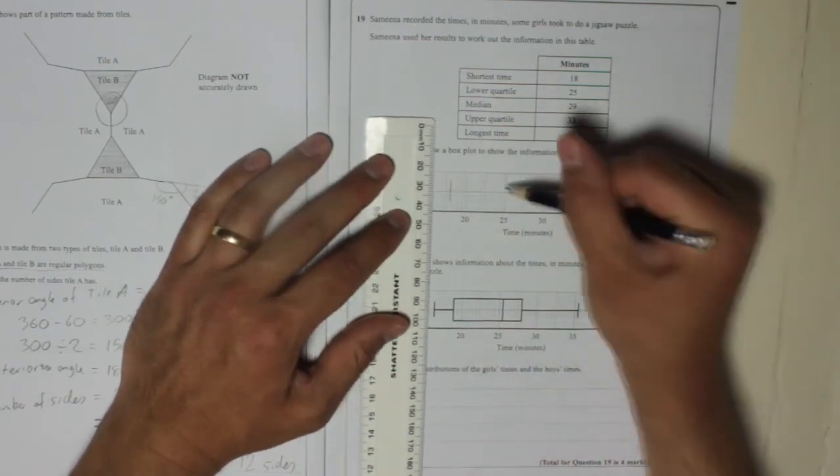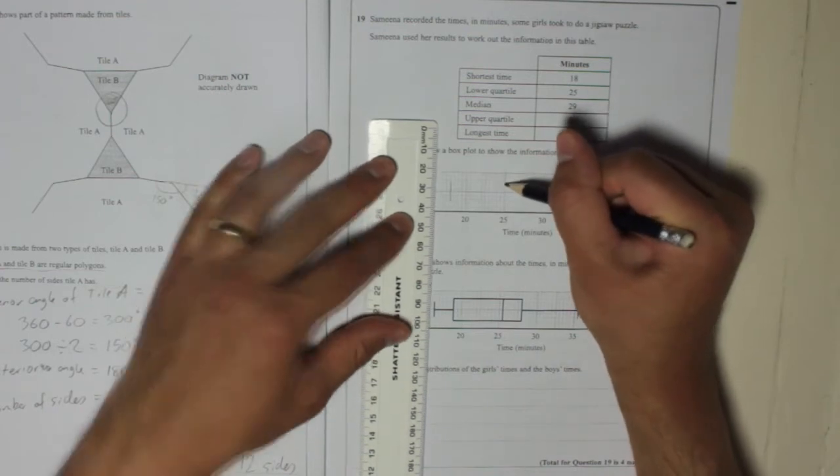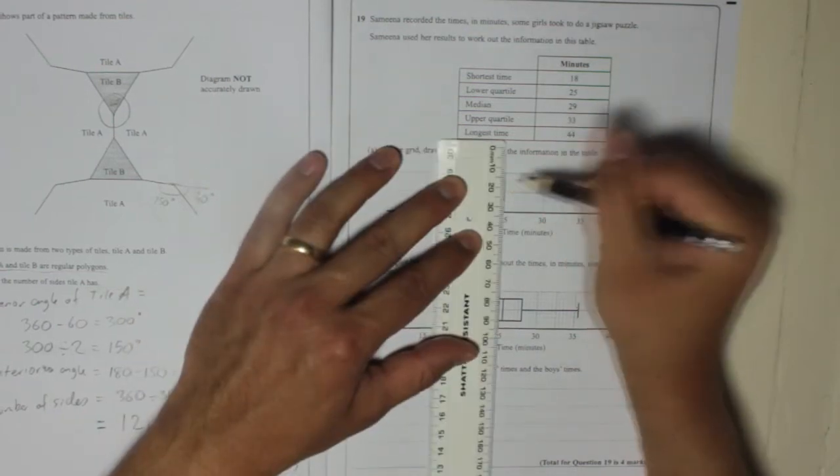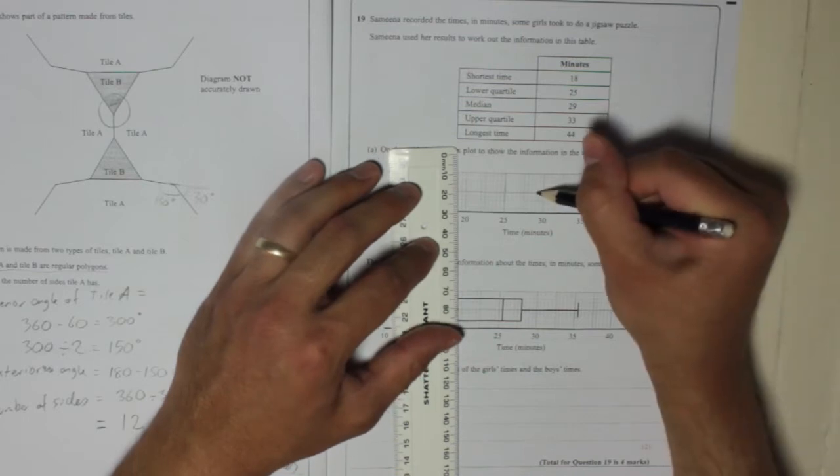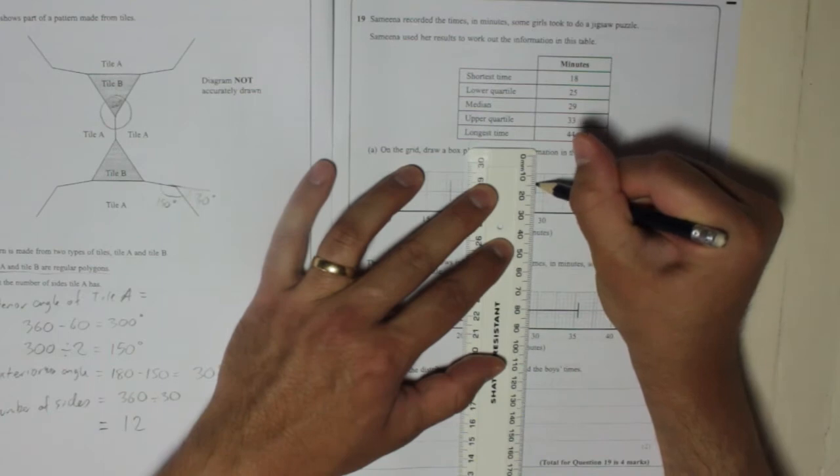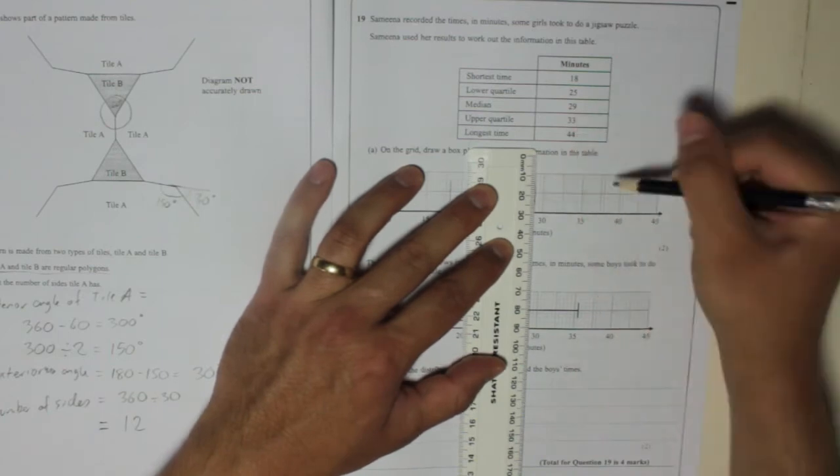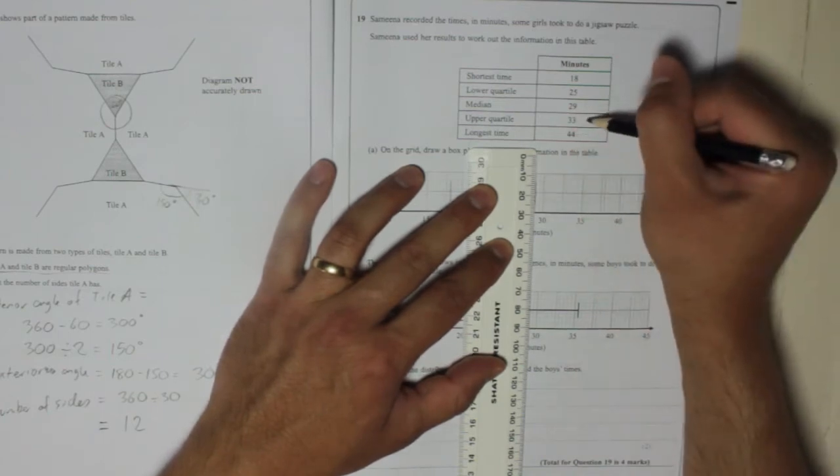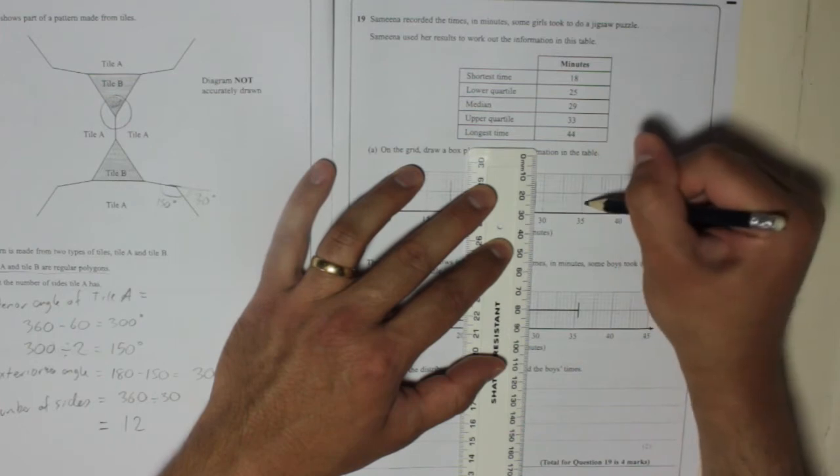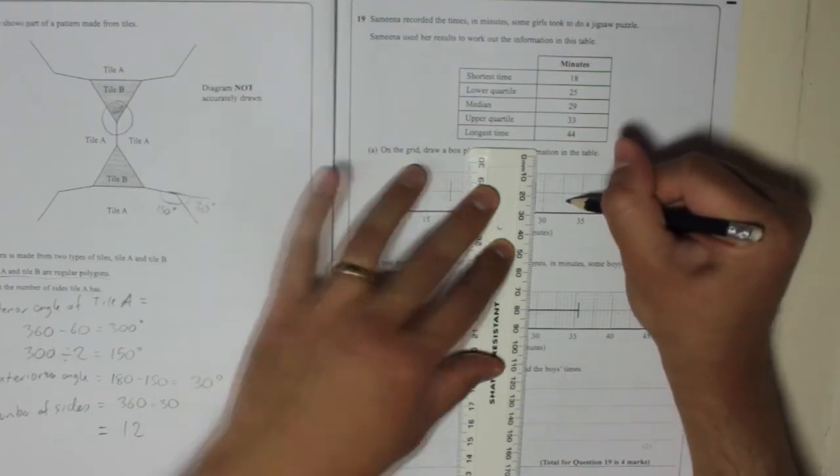The lower quartile is 25, that one's nice and easy to find. And then the median is 29. Don't forget, don't go back one square, it's two squares. I'll probably forget that at some point. Upper quartile, 33, so I'm going to go from 35 back 2, that's 34, back another 2, that's 33.